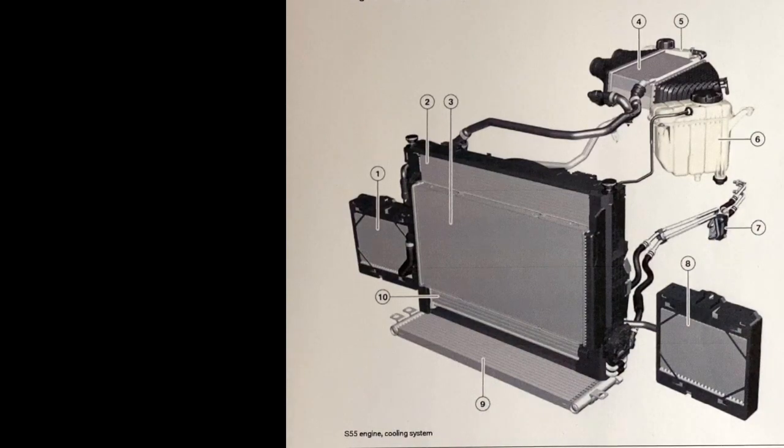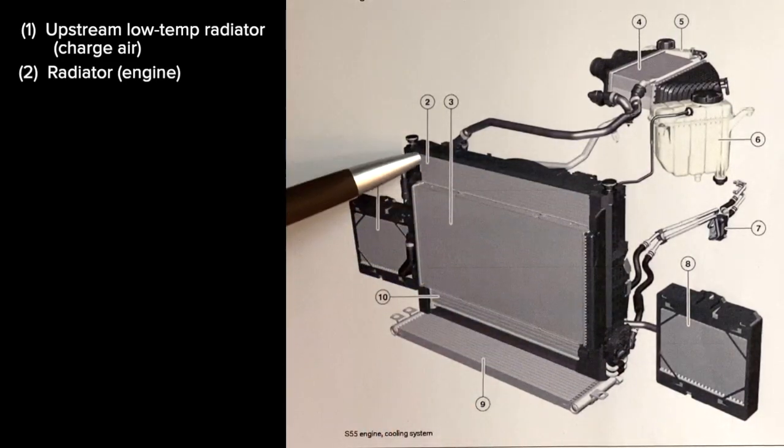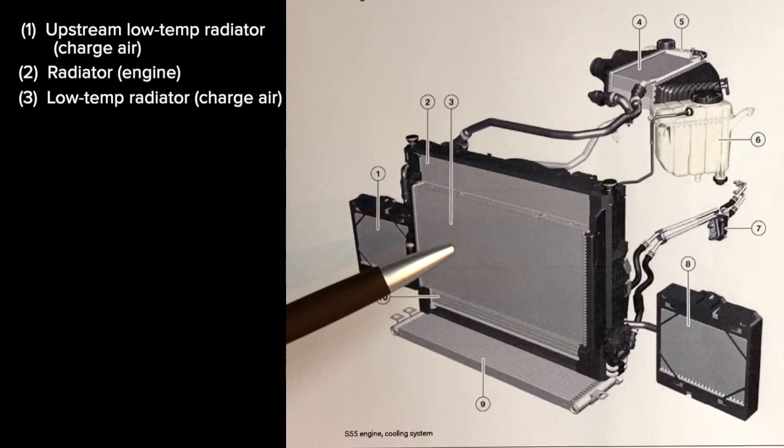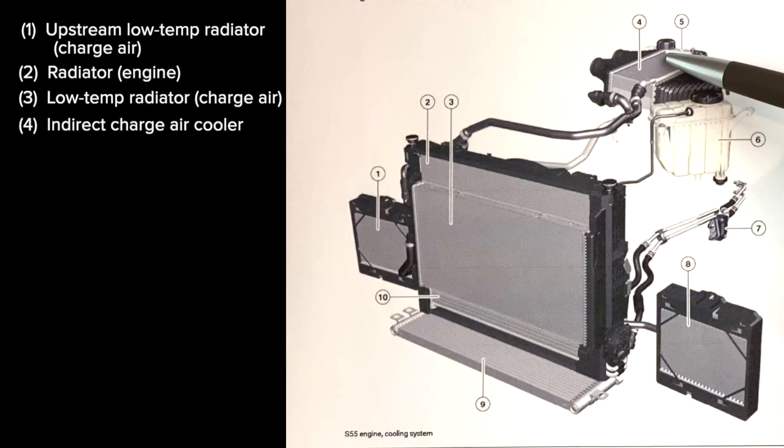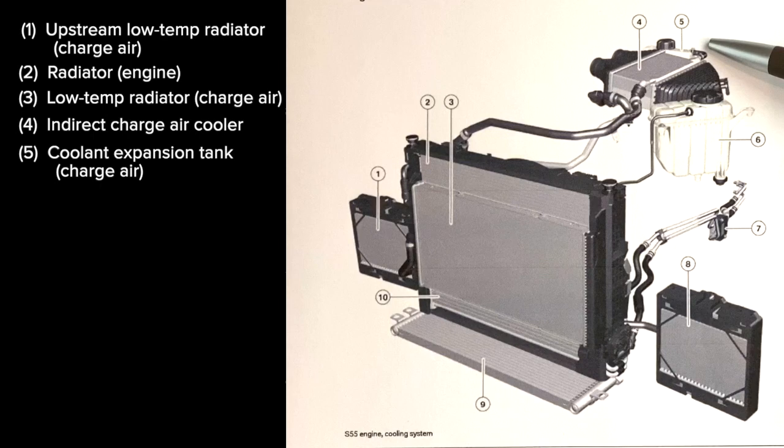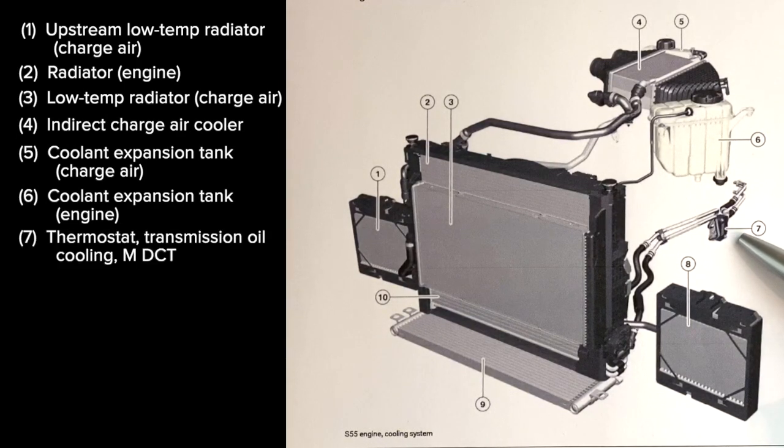So first we can go through and look at all of the labeled parts here. Number one is the upstream low temperature radiator, part of the charge air system. Number two is the large radiator in the back, that's the engine radiator. Number three on front of that is the low temperature radiator, also part of the charge air system. Number four is the indirect charge air cooler, a lot of people call this the intercooler.